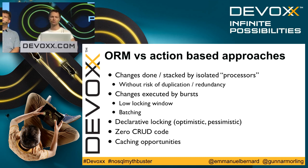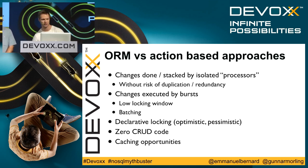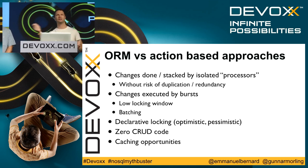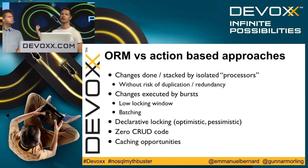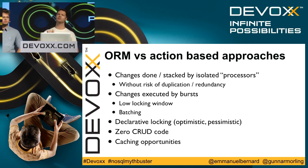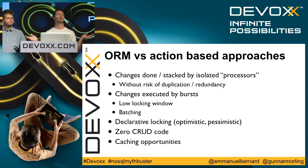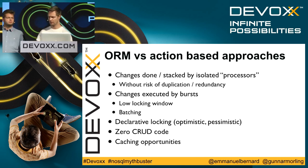The other thing we do is that because we decide when to push stuff into the data store, we can optimize things. First we reduce the locking window — very true for relational databases, sometimes true for other NoSQL stores. More importantly, we can do batching: if you're changing the same type of object, we can apply one operation instead of ten. We can do a lot of stuff declaratively — optimistic locking or pessimistic locking is just a matter of declaring what you want in an ORM. There's no CRUD to write because you've got the entity manager, and of course lots of caching opportunities: first-level cache, second-level cache, and many more.